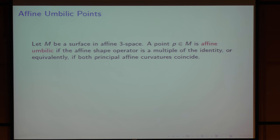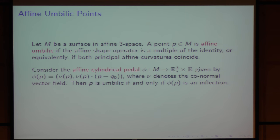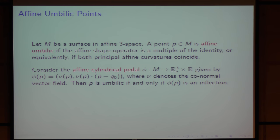Now let us consider the affine case. An affine umbilic point is a point where the affine shape operator is a multiple of the identity, which is equivalent to both principal affine curvatures coinciding. We can also consider the affine cylindrical pedal, given as the conormal and the support function as the last coordinate. Then P is affine umbilic if and only if the image of P at the affine cylindrical pedal is an inflection.